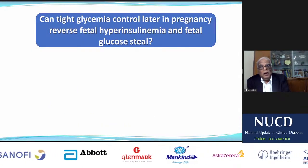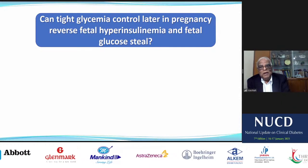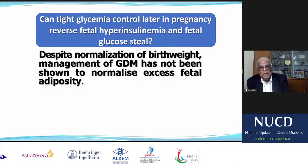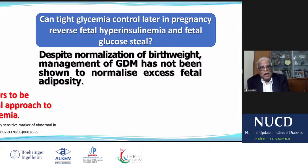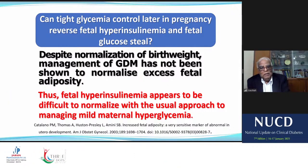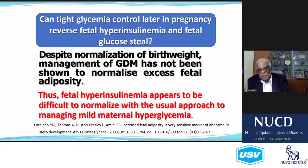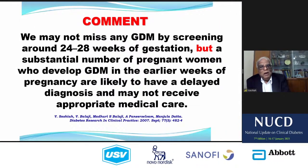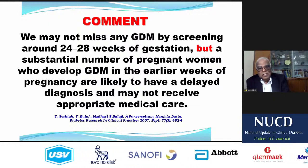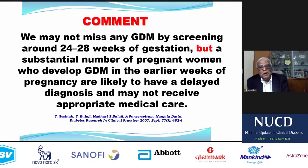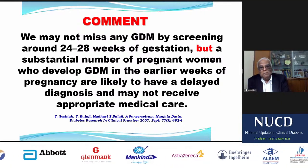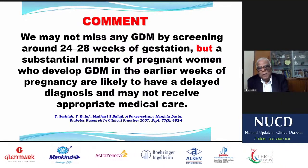Can tight glycemic control in late pregnancy reverse fetal hyperinsulinemia and fetal glucose steal? The answer is no. Despite normalization of birth weight, treatment of GDM has not been shown to normalize the excess fetal adiposity. Fetal hyperinsulinemia appears to be difficult to normalize with the usual approach to managing mild maternal hyperglycemia. The message is: you must screen as early as possible — in the first trimester itself. Screening around 24 weeks of gestation may miss a substantial number of pregnant women who develop GDM in the early weeks of pregnancy, and they are likely to have a delayed diagnosis and may not receive appropriate medical care.